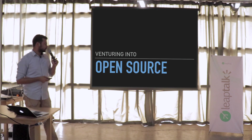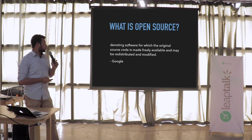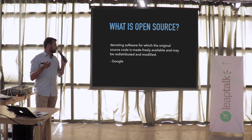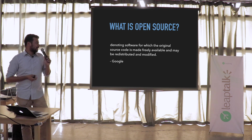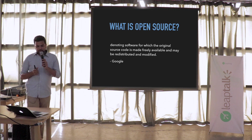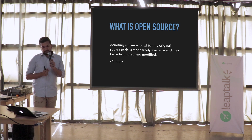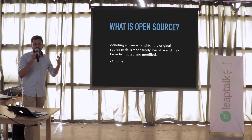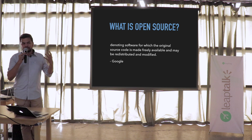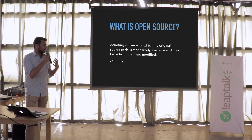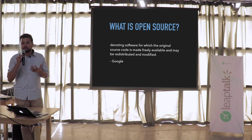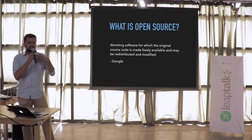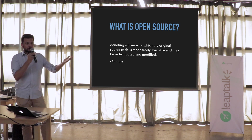The first starting point for open source is what open source really is. This is the Google definition — of course it's correct and what you would write in an exam, but it doesn't really encapsulate why we want to do open source. It basically says it denotes software for which the original source code is made freely available and may be redistributed and modified. How open source started is in the old days people used to have things like printers and cameras and TVs and they wouldn't have the source code to any of it.